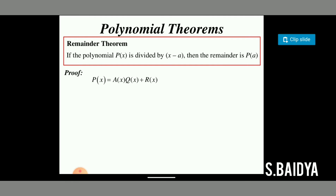Now we know that if any polynomial is divided by another polynomial, then there should exist two unique polynomials called the quotient and the remainder. So from the division rule, if we divide p(x) by a polynomial a(x), then there will be a quotient q(x) and a remainder r(x), so we can write p(x) = a(x) · q(x) + r(x).